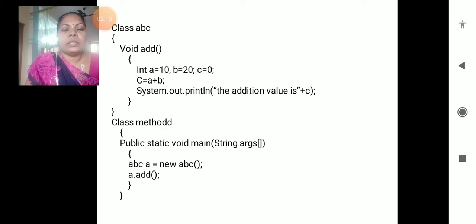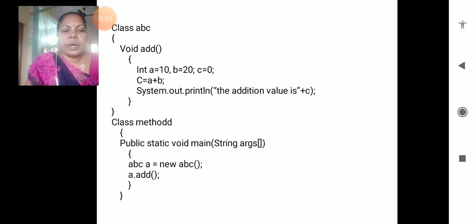new is a keyword for creating the object, and ABC is the class name. Then calling the methods: the object name is a dot add - add is the method we prepared in the class block - we are calling the add method. So this is the creation of object and the creation of method.